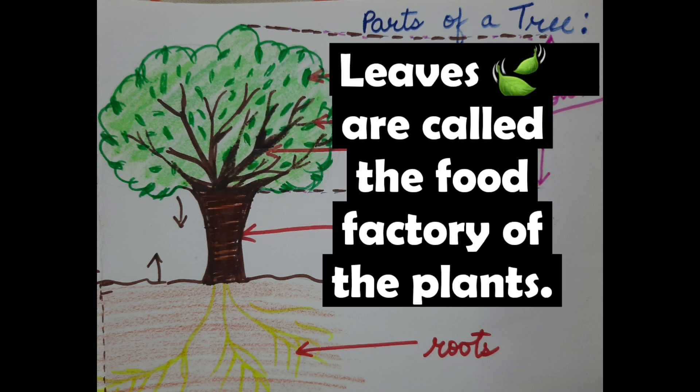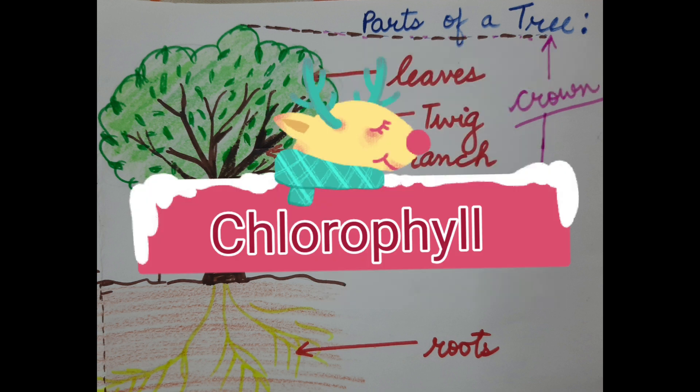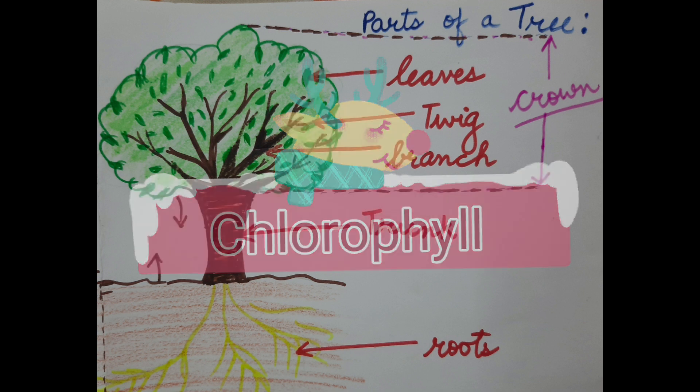Leaves are the food factories of a tree. They contain a pigment called chlorophyll. Chlorophyll is an extremely important biomolecule used in photosynthesis.